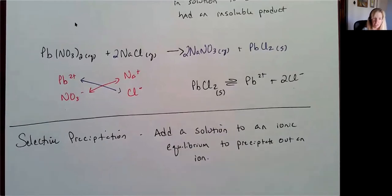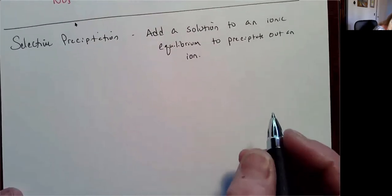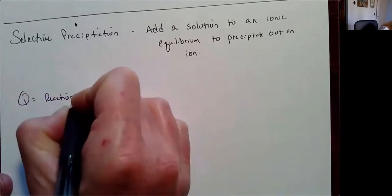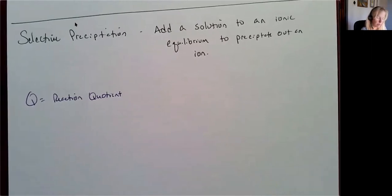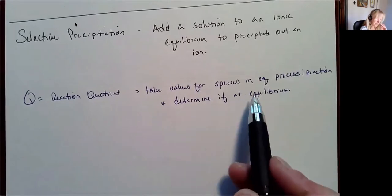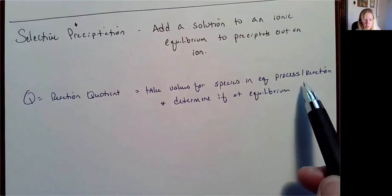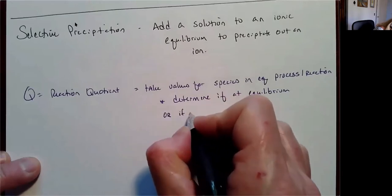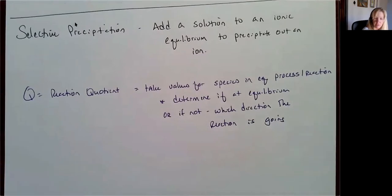So how do I know how much I need? I'm going to talk about Q and K again. Q is our reaction quotient, and it's going to come into play throughout all these equilibrium scenarios because Q allows you to take values for species in your equilibrium reaction and determine if it's at equilibrium or, if not, which direction the reaction is going — forward or in reverse.